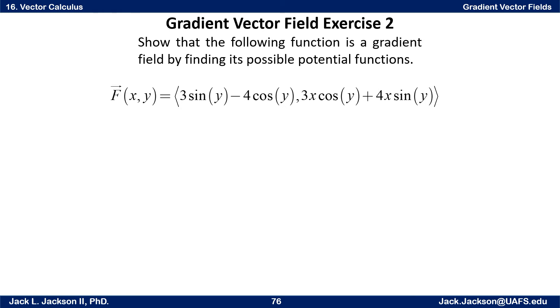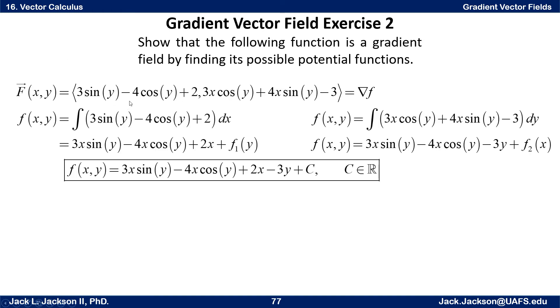So basically here's what you'd end up doing. We know that this first component 3sin(y) - 4cos(y) + 2 has to be the derivative with respect to x of the original function. So the potential function has to be an antiderivative of that with respect to x, treating y as a constant, like a partial antiderivative. Just a regular old derivative there but treating y as a constant, doing an antiderivative.